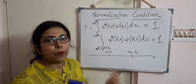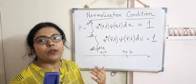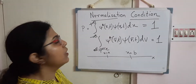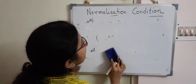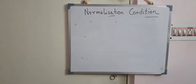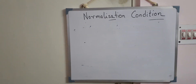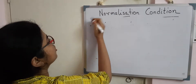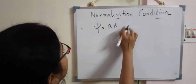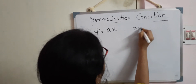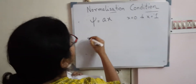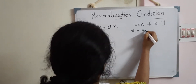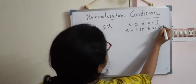We will do two problems based on what we have discussed regarding the probability of finding a particle within a certain region and the application of the normalization condition. The first problem: what is the probability? We have a wave function χ = ax, where a is a constant, and the particle is moving between x = 0 and x = 1. We want to find the probability that the particle lies between x = 0.35 and x = 0.45.